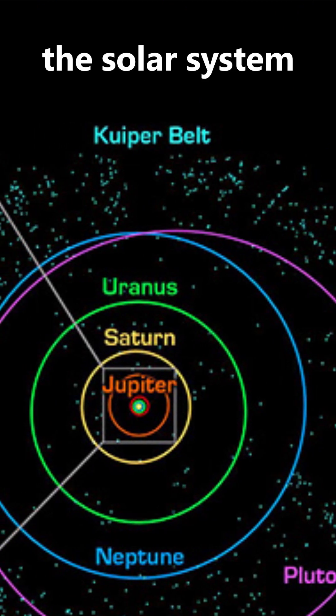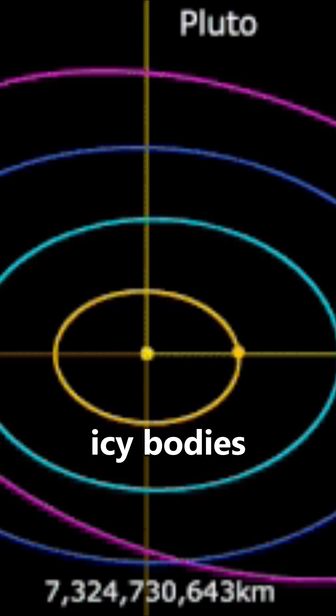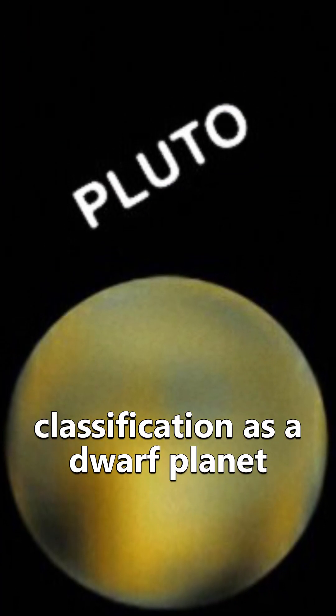Pluto orbits in a region of the solar system called the Kuiper Belt, which is filled with other small, icy bodies. This also influenced its classification as a dwarf planet.